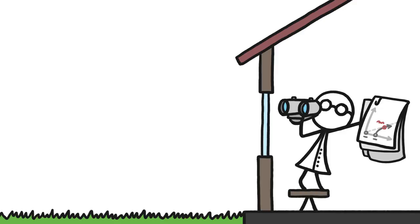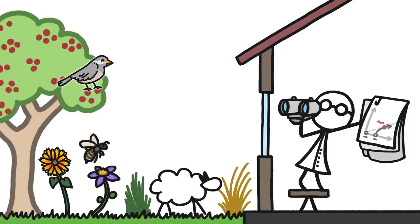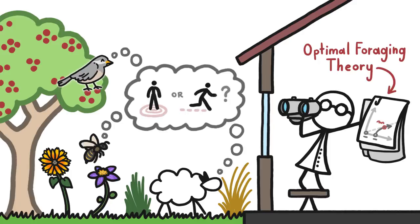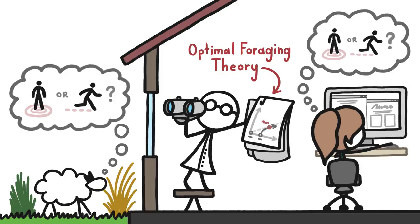Ecologists already have all sorts of models to describe how animals forage. And it turns out that one of these models, which explains how animals move between patches of food, also predicts how humans move between websites.